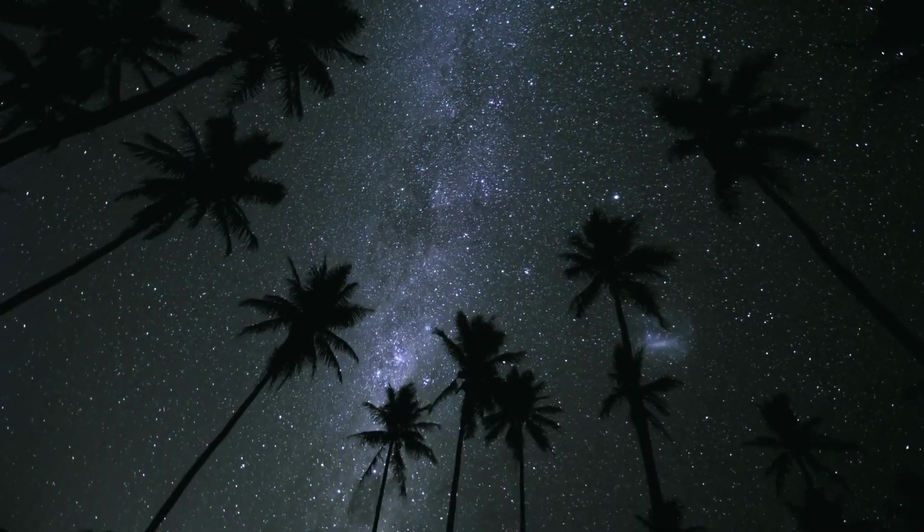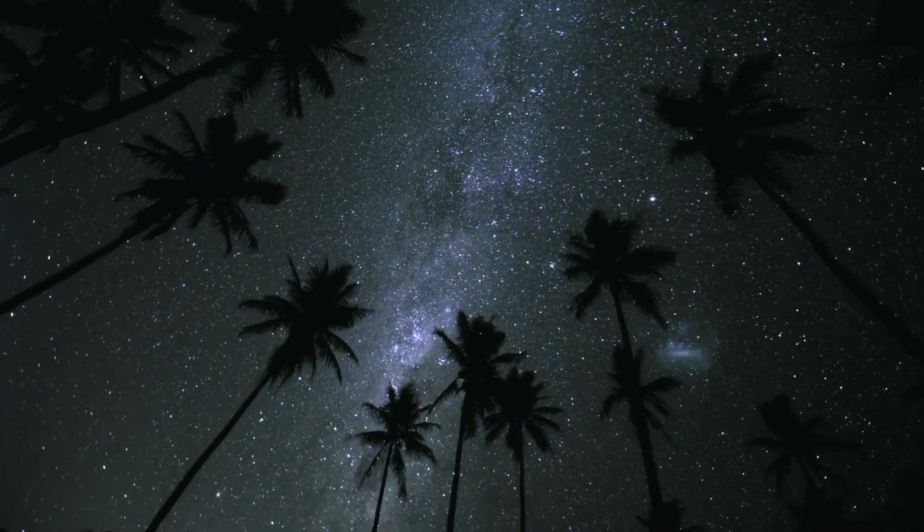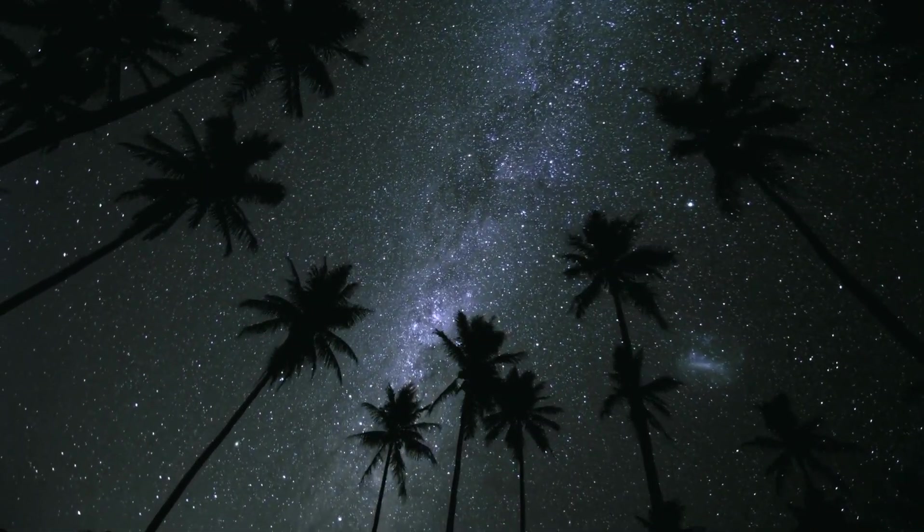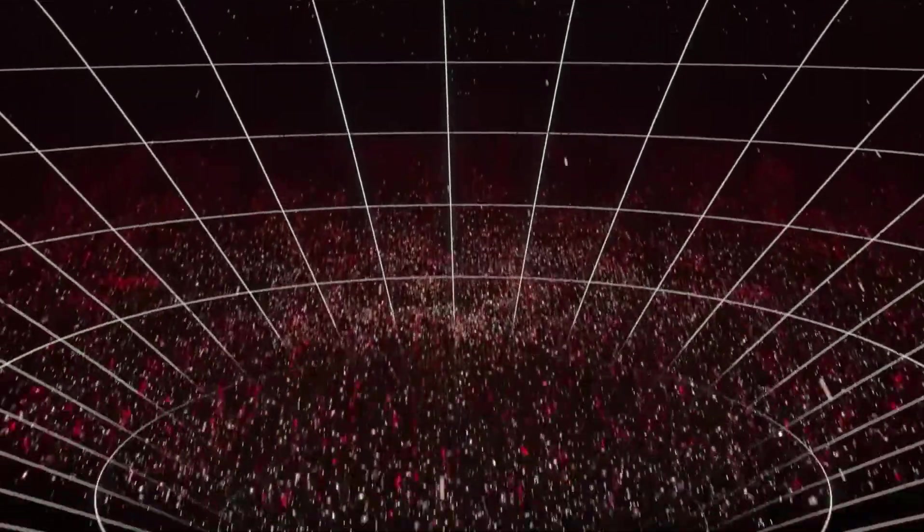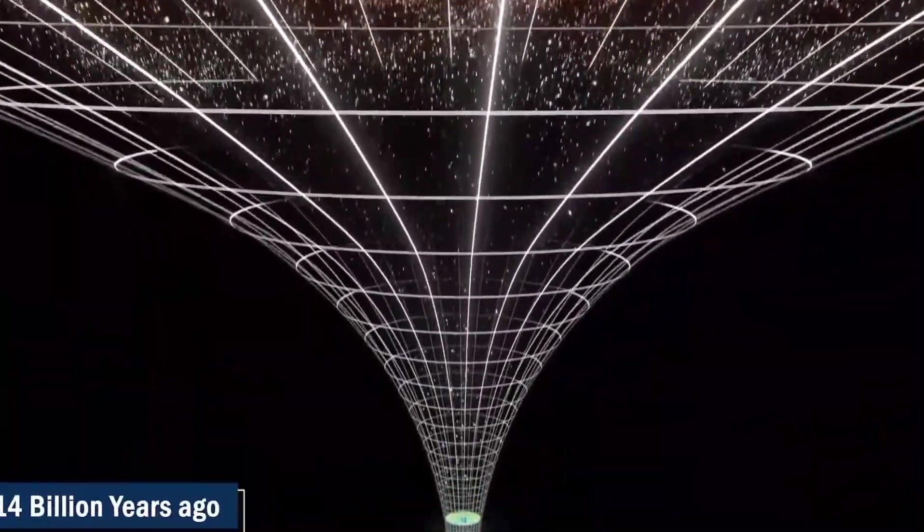According to the most widely accepted models of galaxy formation, giant galaxies are formed from small, faint clouds that gradually coalesce through cosmic mergers. This process takes billions of years.